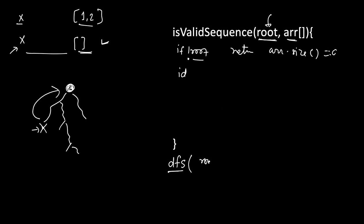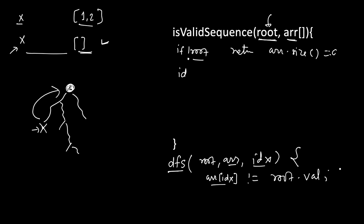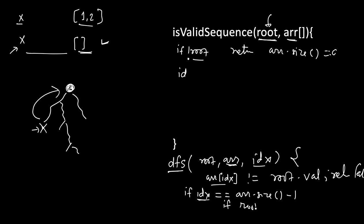Let's define DFS. We pass root, array, and one index. We check: if array[index] is not equal to root's value, there is a mismatch so we return false. If that's not the case, the current element matches the current node. Then we check if idx equals array.size() minus 1 — that is, this is the last number in the array. Then we check if root is a leaf or not. If it's a leaf, we return true; otherwise false.